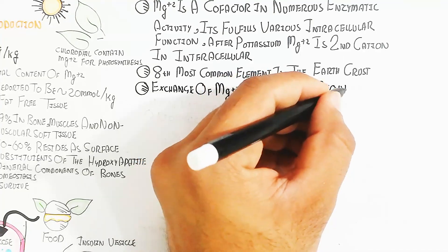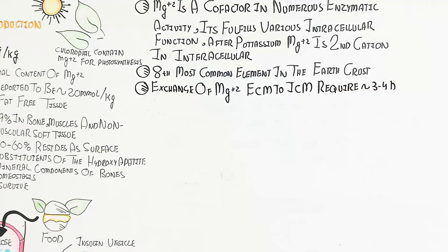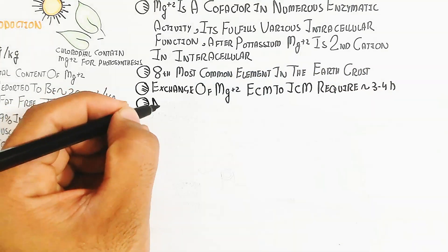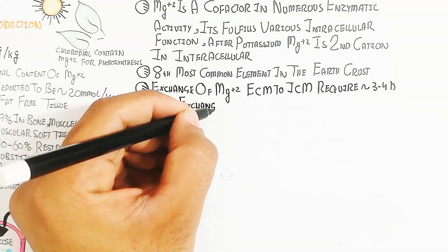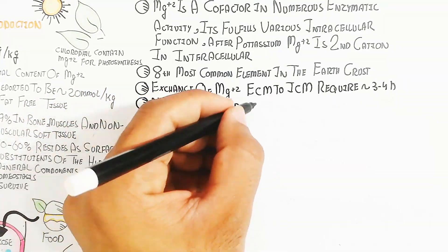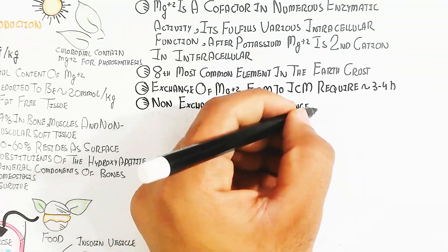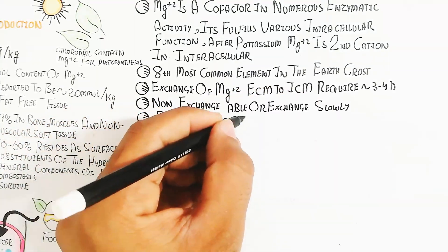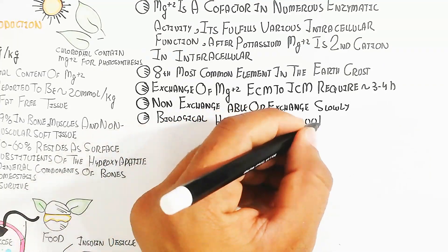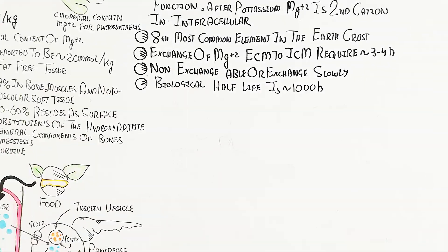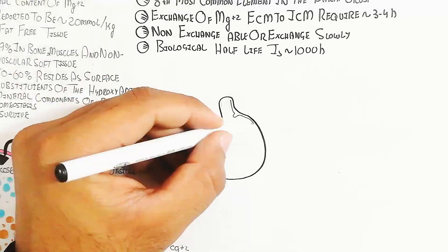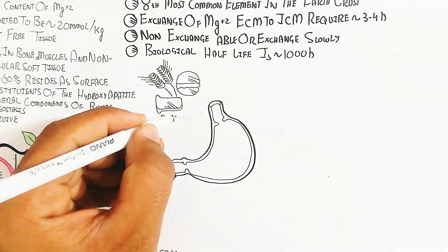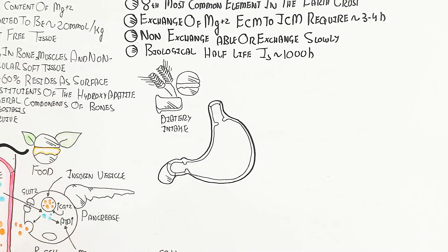The exchange of magnesium from extracellular to intracellular matrix requires 3 to 4 hours, so it's non-exchangeable or exchanges slowly. The biological half-life is 1000 hours, so magnesium requirement is less than potassium in our diet because magnesium is abundant in vegetables.